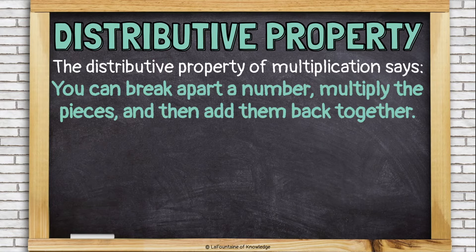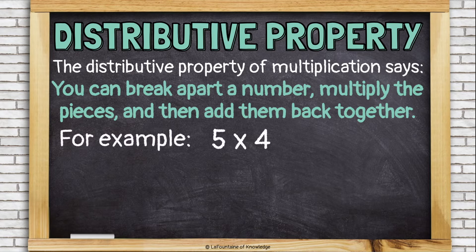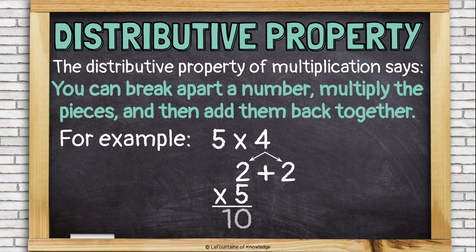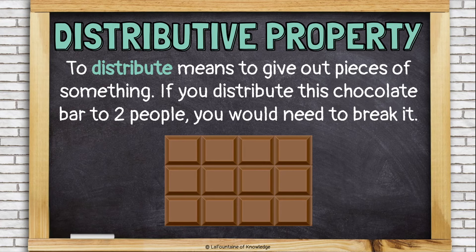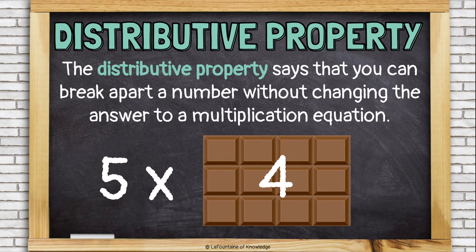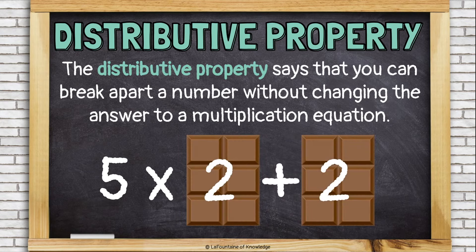The distributive property of multiplication says you can break apart a number, multiply the pieces, and then add them back together. Let's use five times four — I'm going to break the four apart into two plus two, then multiply each of those pieces by five, and then add it all back together. To distribute means to give out pieces of something. If you distribute a chocolate bar to two people, you would need to break it. The distributive property says that you can break apart a number without changing the answer to a multiplication equation.